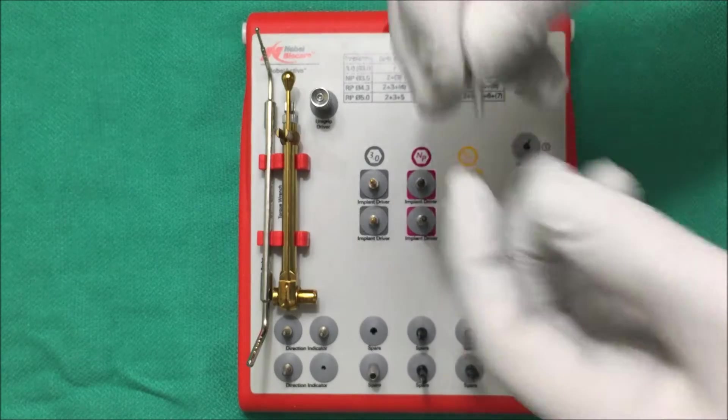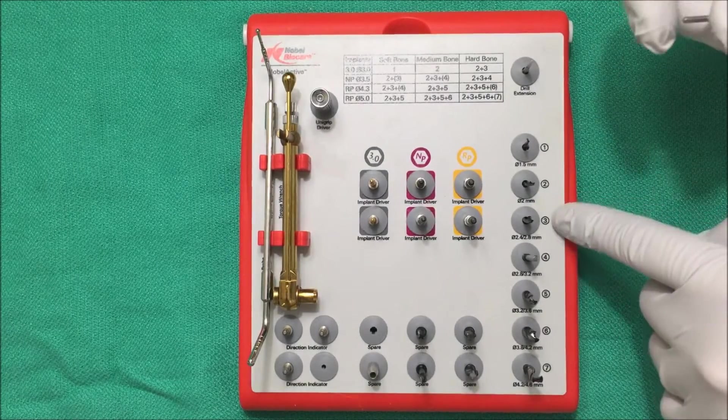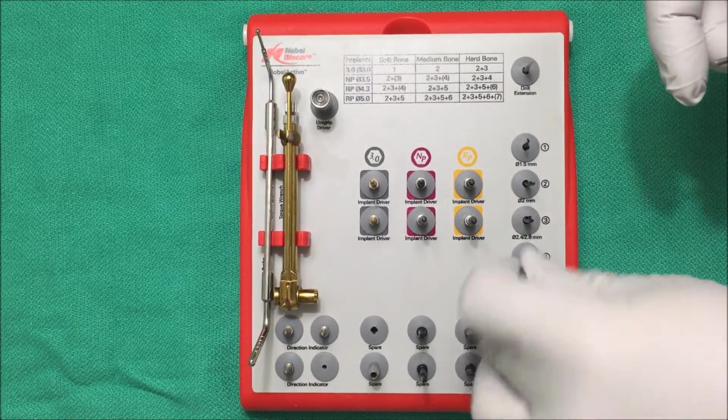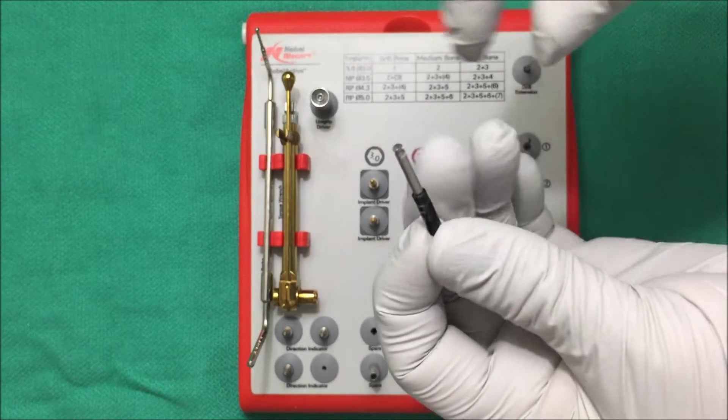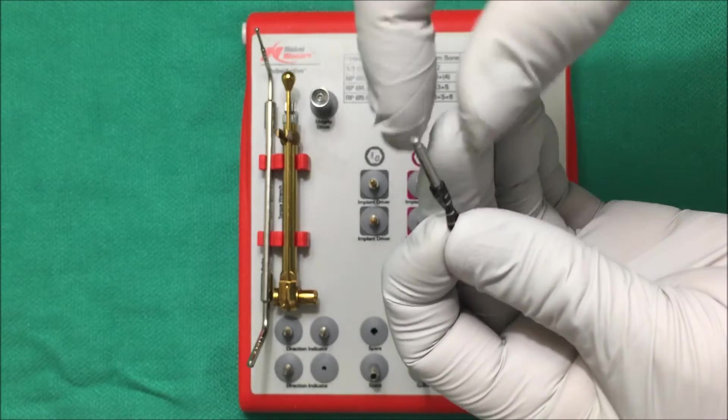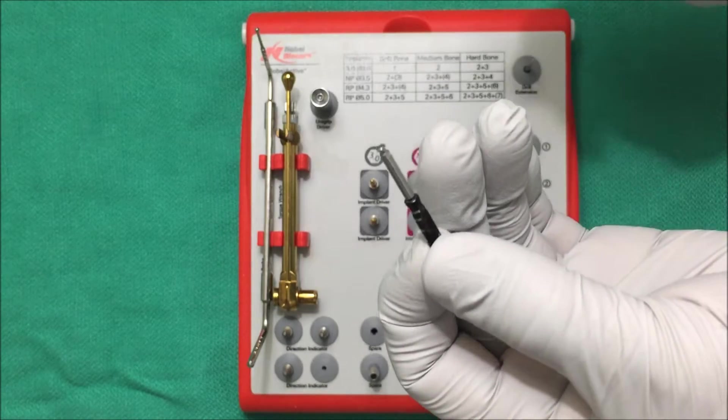And if you drill wider than the third drill you can use the osteotomy drill itself as a paralleling pin. So all you do is put it into the osteotomy site and then it helps you to evaluate. So this top part helps you to evaluate the angle of your implant.